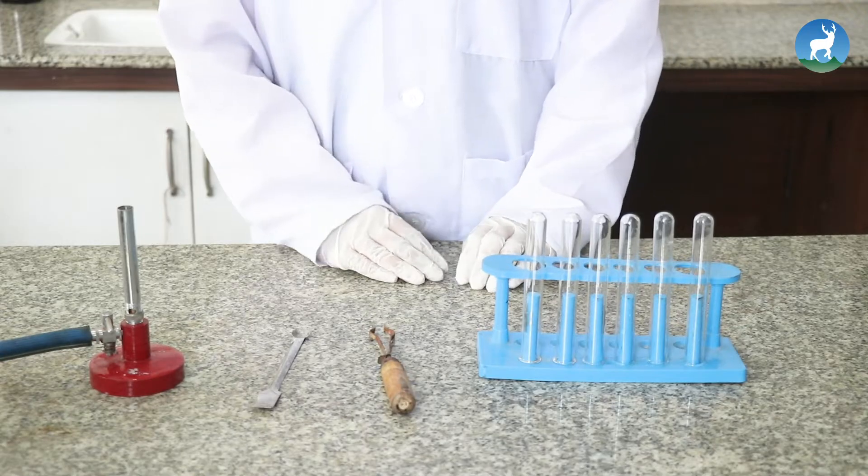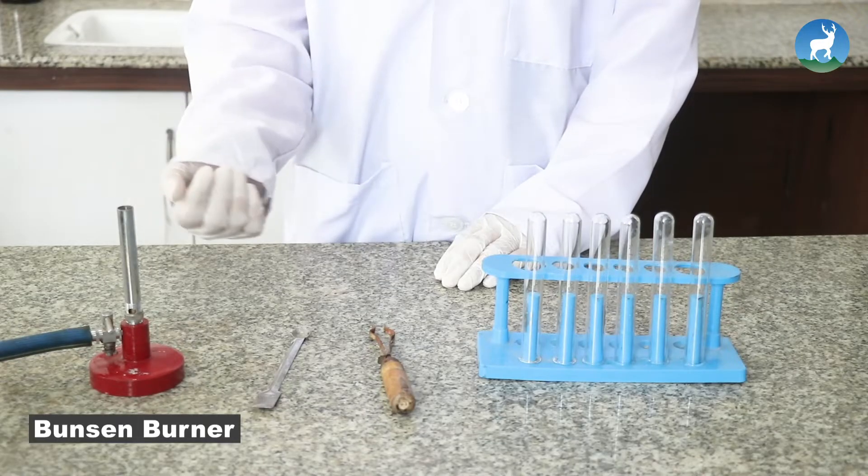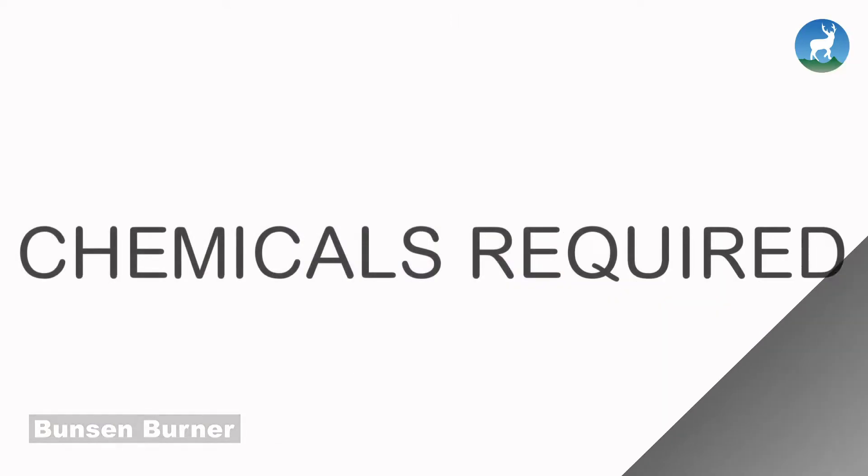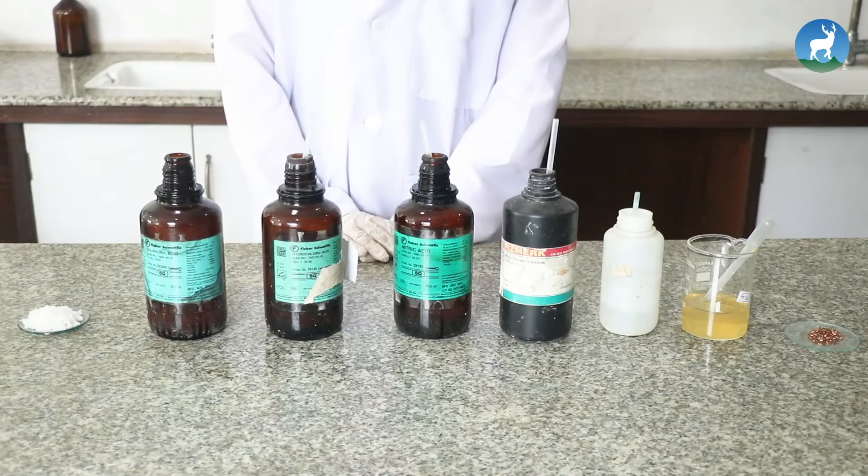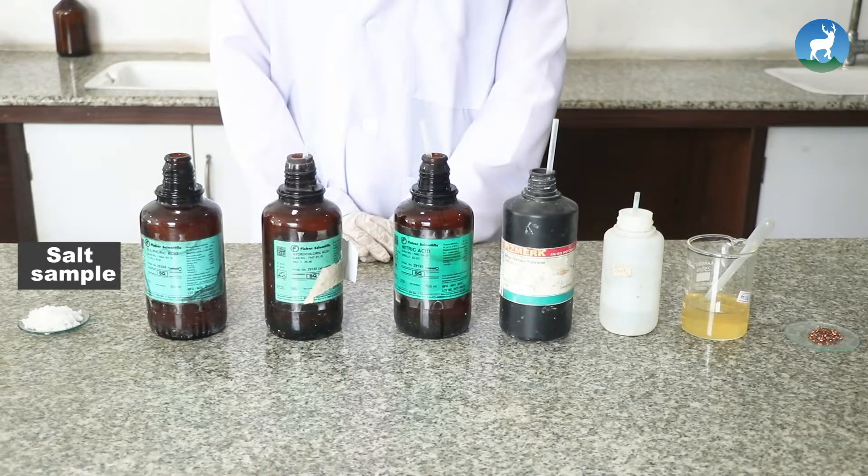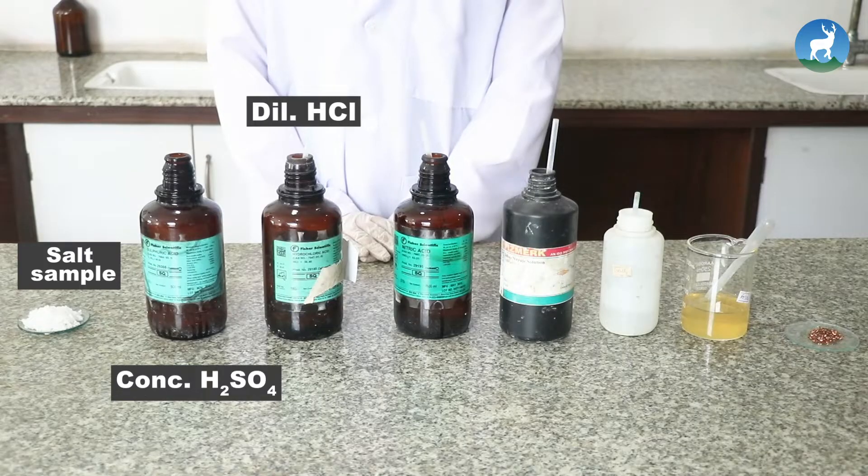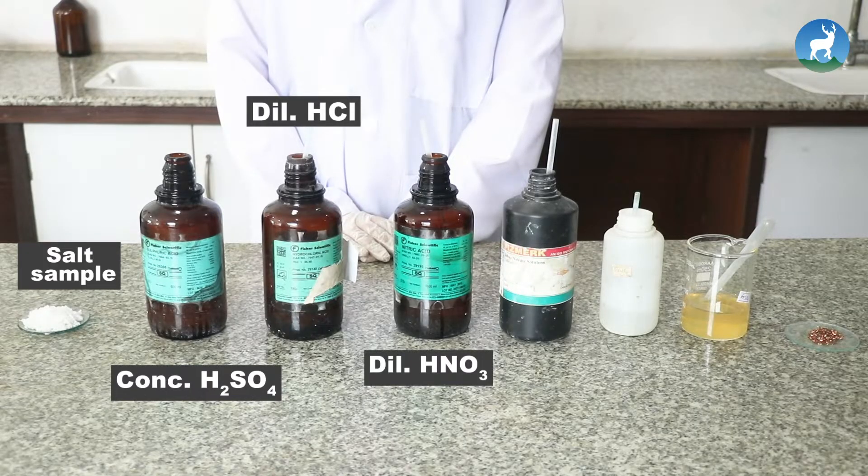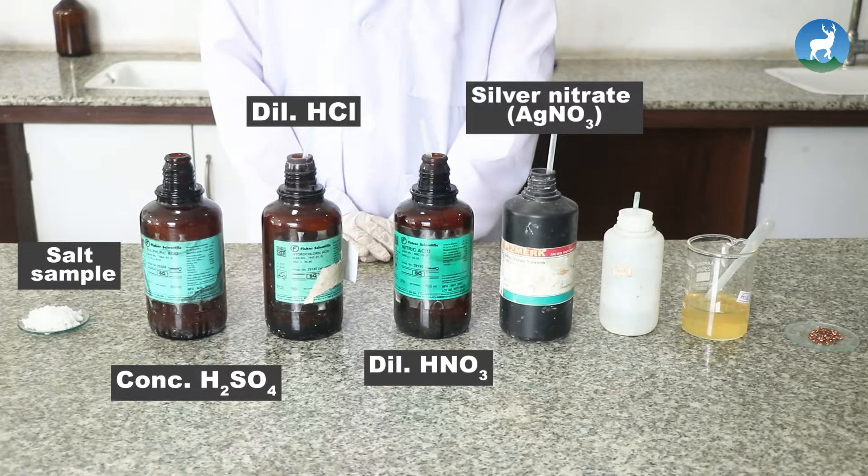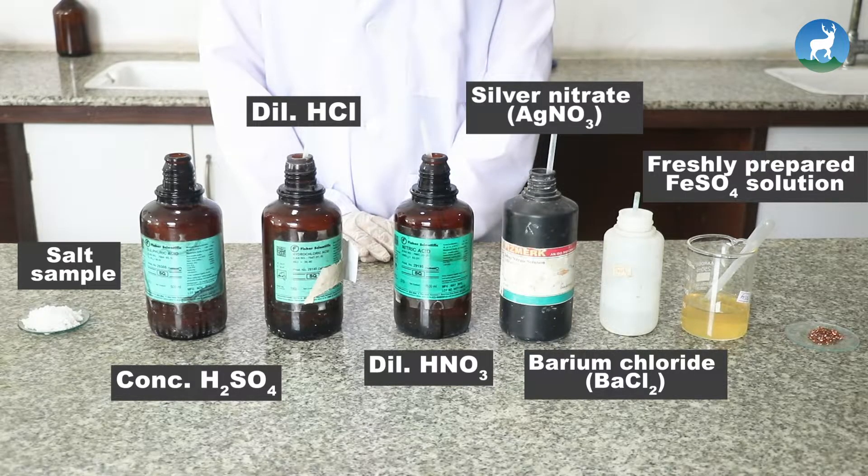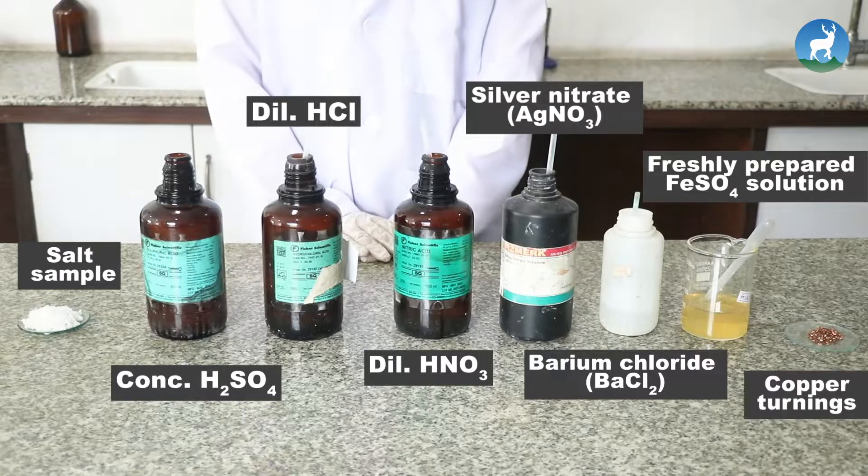The apparatus required are Bunsen burner, spatula, test tube holder, and test tubes. The chemicals required are salt sample and different chemical reagents like concentrated sulfuric acid, dilute hydrochloric acid, nitric acid, silver nitrate solution, barium chloride solution, ferrous sulfate freshly prepared solution, and copper turnings.